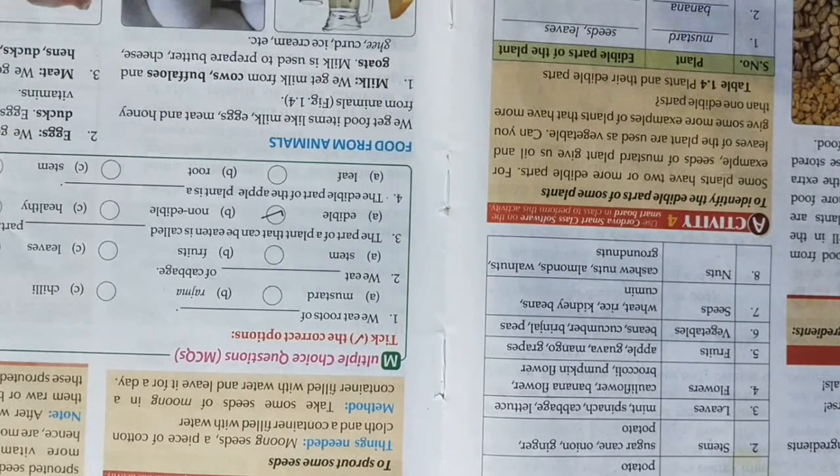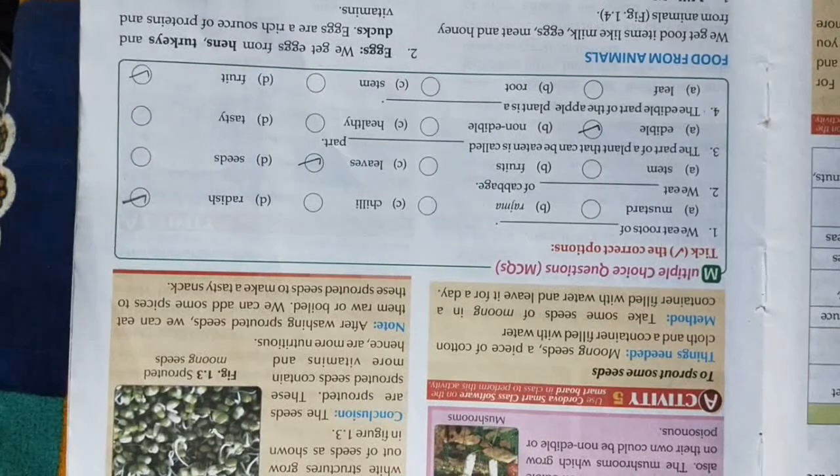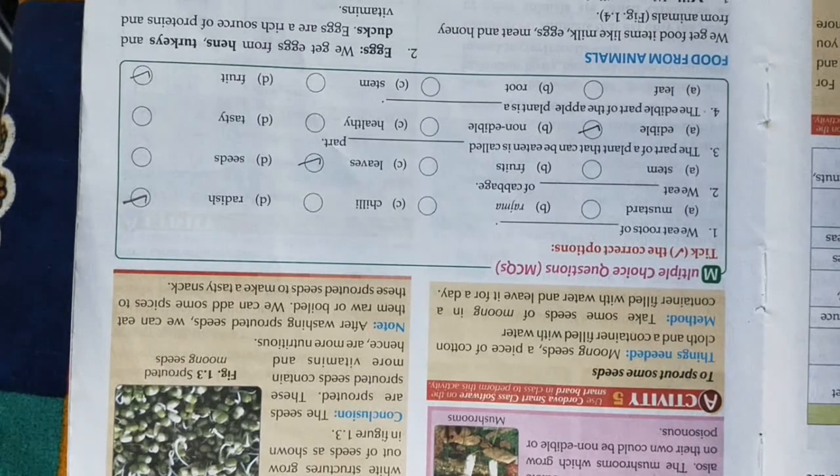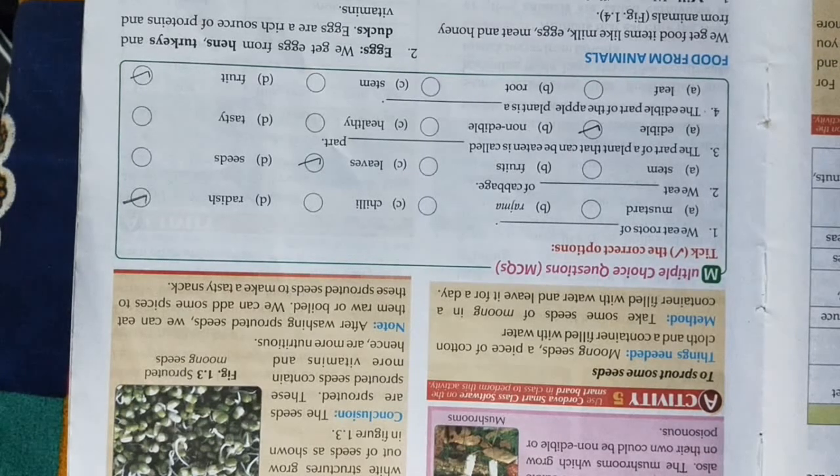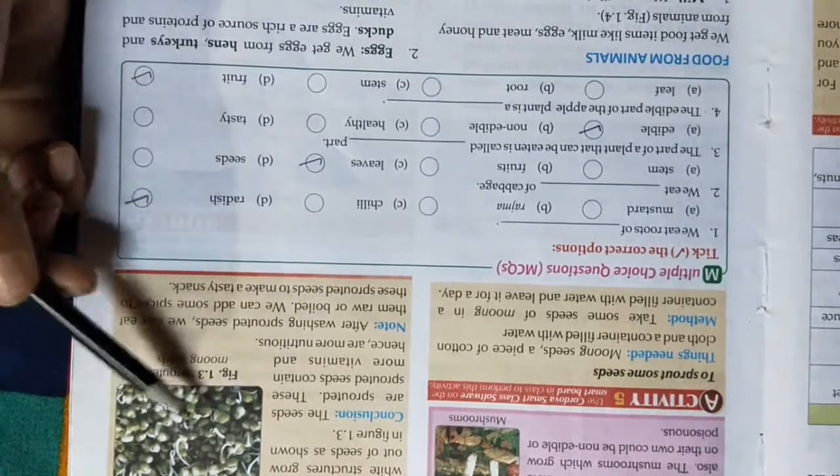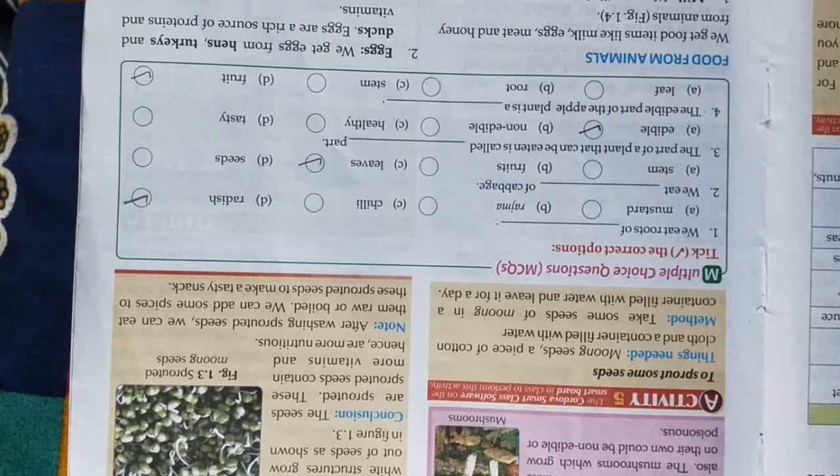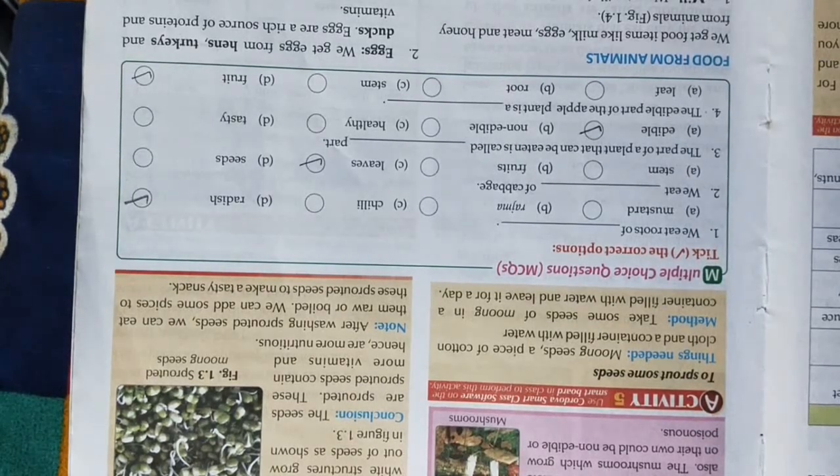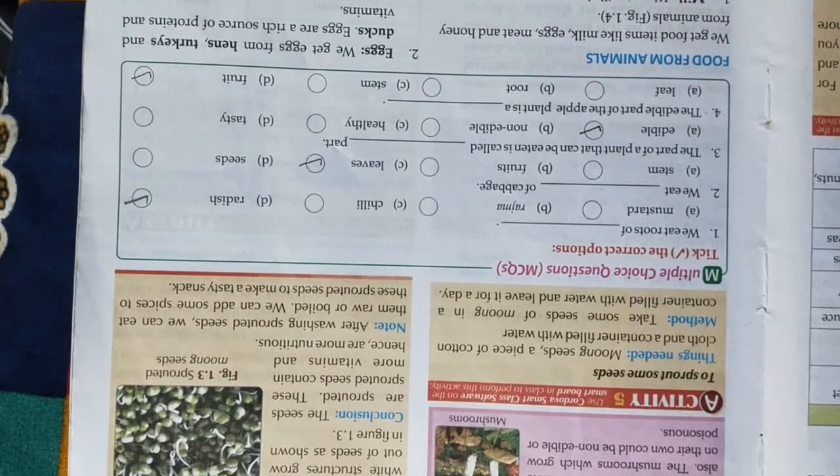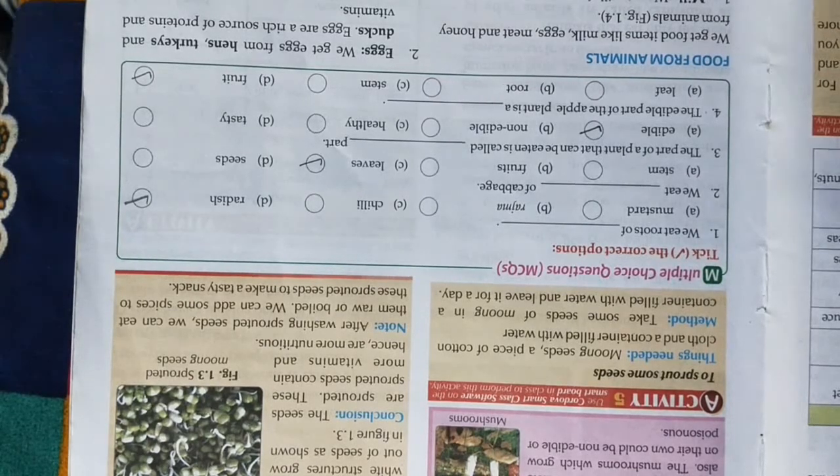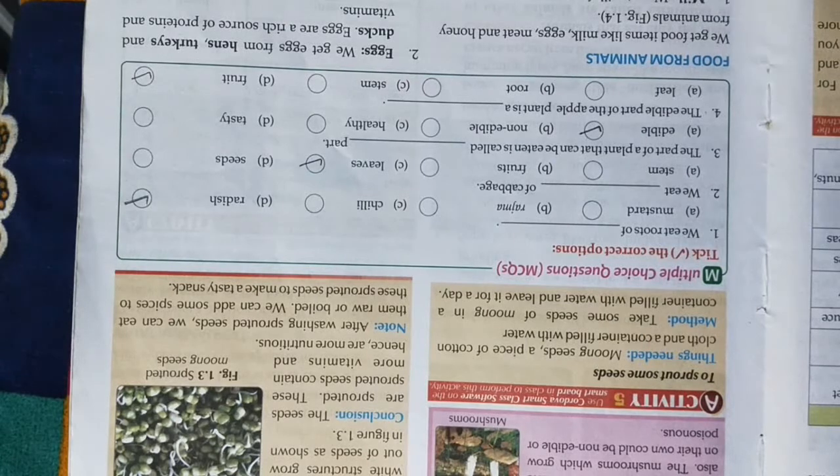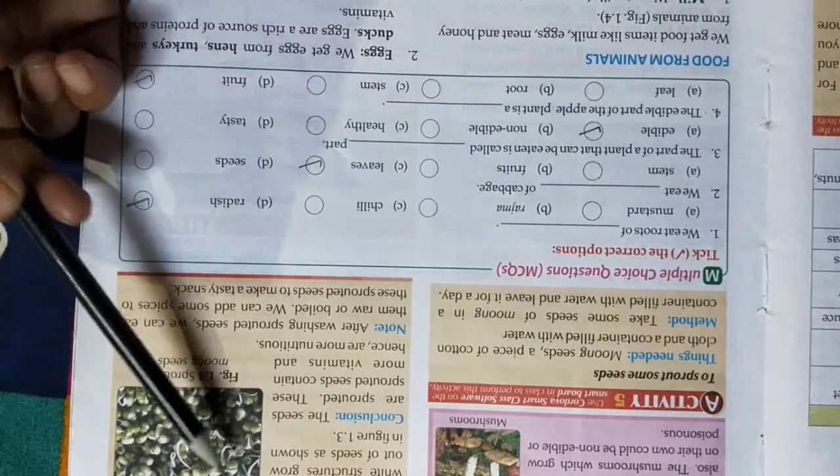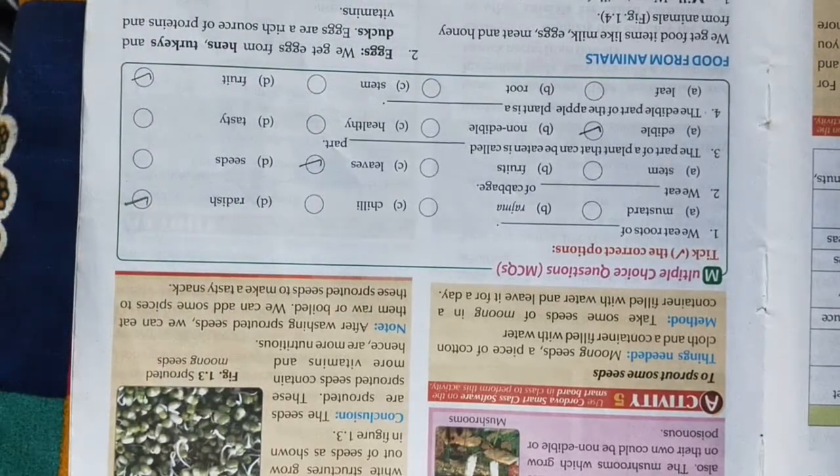When the seeds germinate with the help of water, there is a white structure—that is sprouted seeds. Seeds are very easy to sprout. You can see this in the activity. What do you need? In a bowl, soak some seeds and leave them for one night. Next day, drain the water, wrap the seeds in a cotton cloth, and you will see the white structure. The seeds will be sprouted seeds.